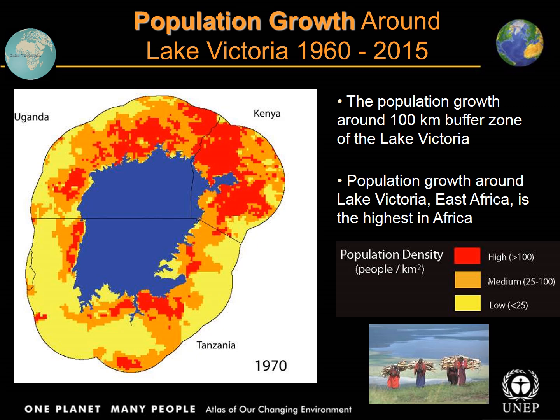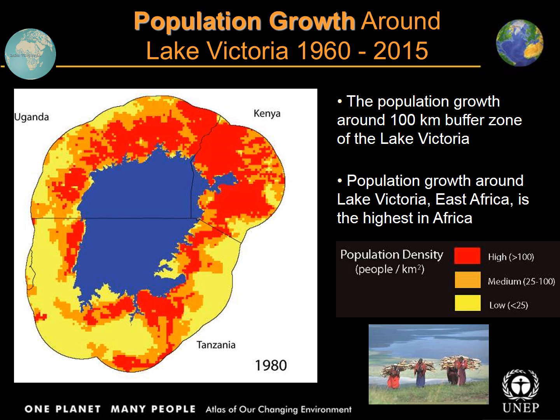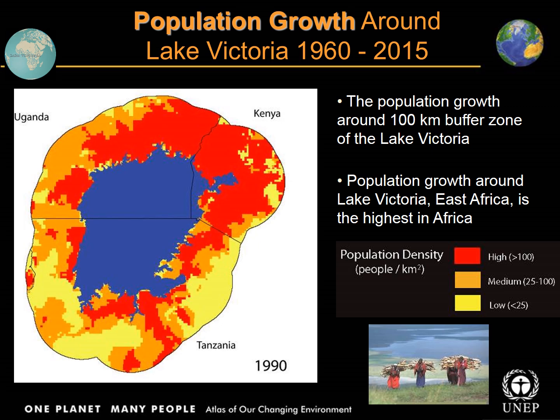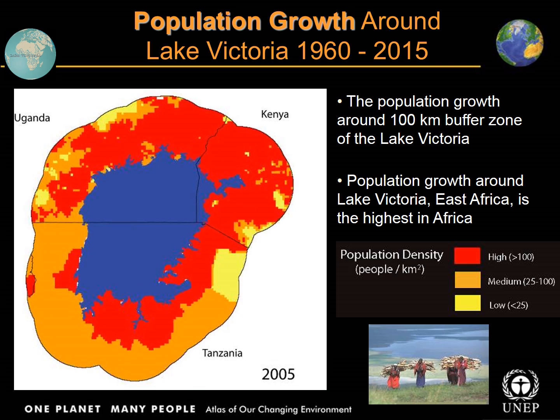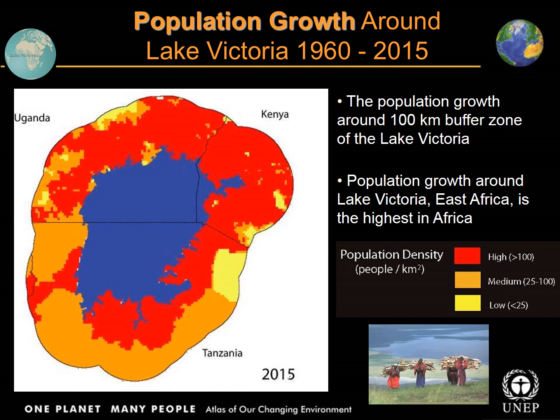Here's 1970 — it's getting a little more crowded around Lake Victoria. By 1980, there's a lot more red and orange. By 1990 and then 2000, very little yellow is left — the entire area seems to be covered in red or orange, and the red is growing. Here's 2005, 2010, and this is what it looks like in 2015. We have an area that has gone from relatively low population density to a very high population density in not a terribly long amount of time.